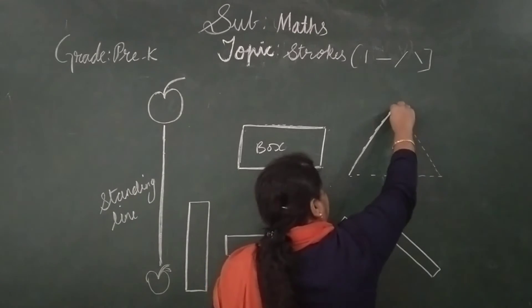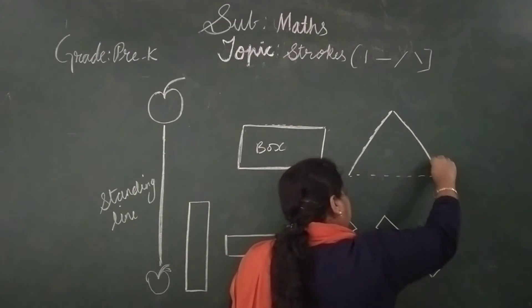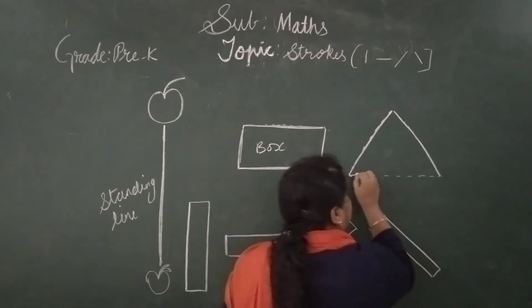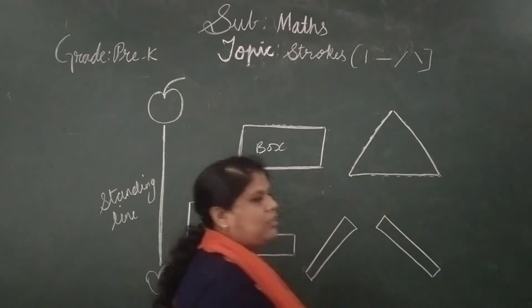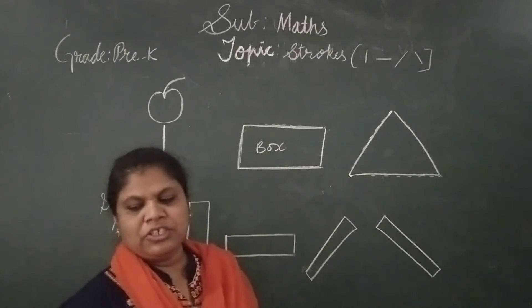Here, one more slant line. Here, one more slant line. Here again, if you join this sleeping line. So, this becomes a triangle.